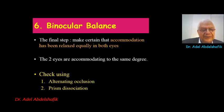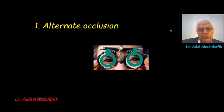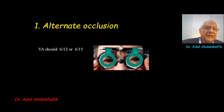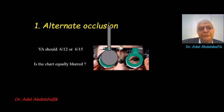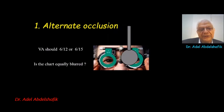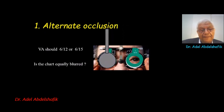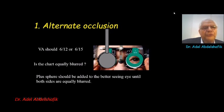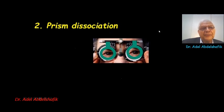We can check binocular balance by one of two methods: alternating occlusion or prism dissociation. For alternating occlusion, once the expected correction with sphere and cylinder is in place, we blur the patient — say to 6/12 — then do alternating occlusion and ask if the image is equally blurred on each side. If not, we add plus sphere on the side with better vision until both sides are equally blurred, confirming accommodation is relaxed to the same degree on both sides.